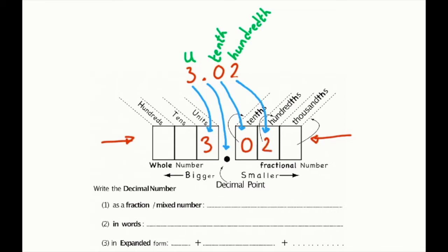Easy, isn't it? For the second part of the exercise, we are going to express the decimal number in two different forms. We can change this decimal number as a mixed number, for instance.